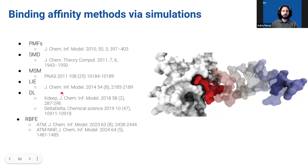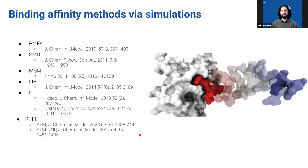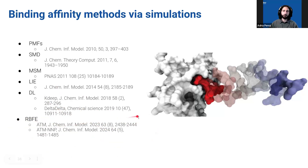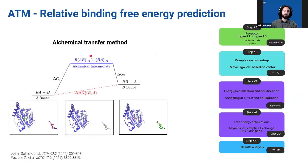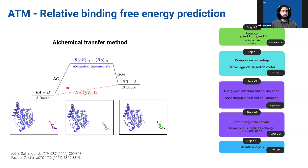We have papers trying to validate the alchemical transfer method (ATM). This method wasn't developed by us, but by Emilio Gallicchio's lab, though we did work with them to help validate it. Differently from other common methods like FEP, ATM uses a single simulation box containing the protein plus two ligands — one in the binding pocket and one in solution. Instead of having four different systems, you have only a single system, which greatly simplifies the execution of simulations.